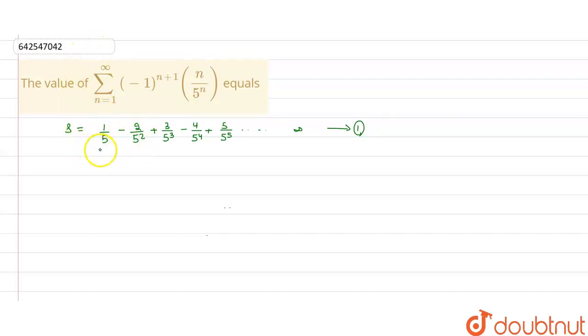Now, as we can see, the denominator term is forming a GP with a common ratio of minus 1 by 5, and the numerator is forming an AP with a common difference of 1. So this is forming a mixture of AP and GP.